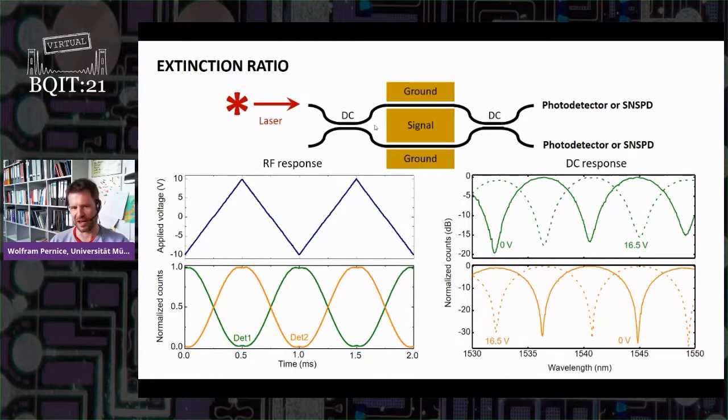If you want to go to even higher extinction ratios, you can add additional modulators at the end and at the beginning to cancel out any imperfections in the splitting ratio this way based on the work that was done in Bristol before. You can even reach higher extinction ratios if that is needed. Nevertheless, for our purposes, this is already good enough.